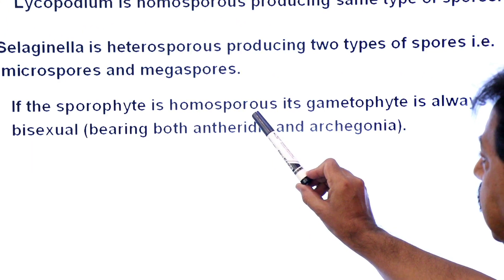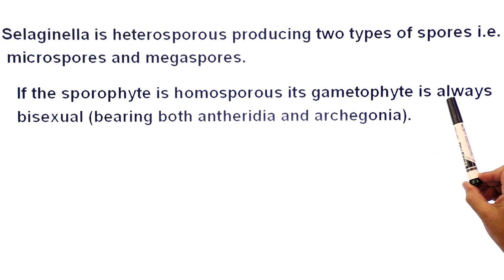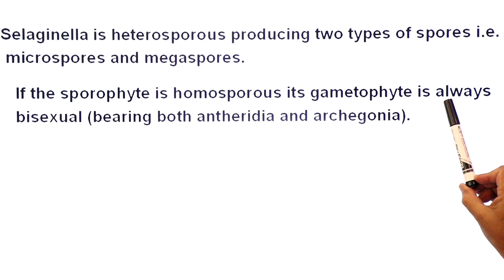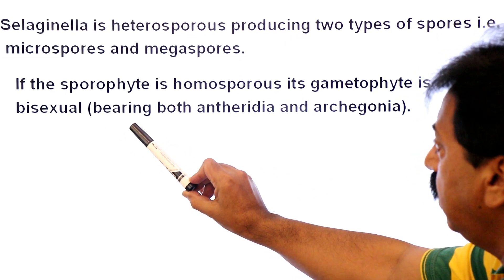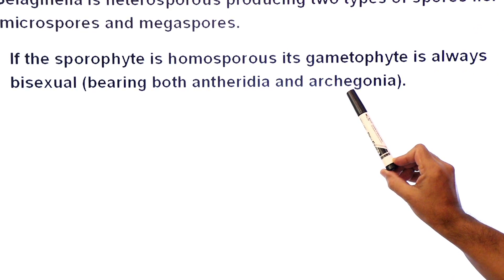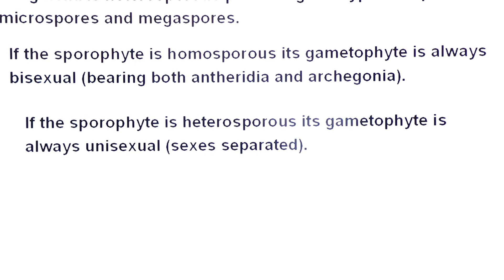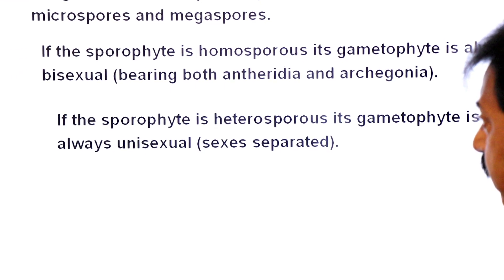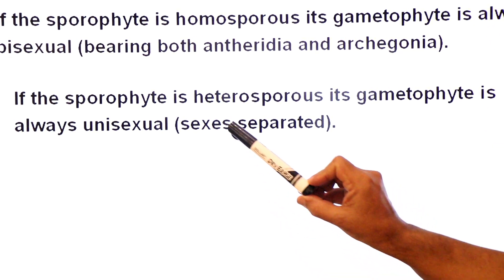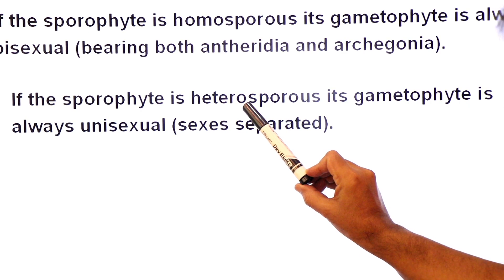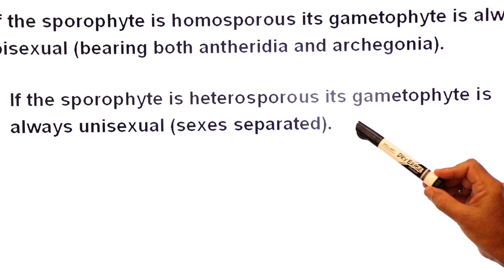If the sporophyte is homosporous, its gametophyte is always bisexual — bearing both antheridia and archegonia, meaning producing both sperm and egg. But when the sporophyte is heterosporous, its gametophyte is always unisexual.